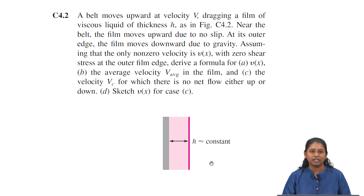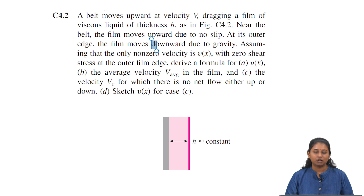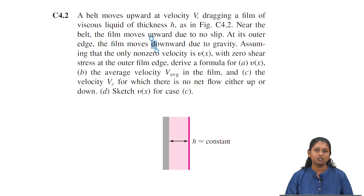This is a tutorial question that we solved in the fluid mechanics course. The question is: a belt moves upwards at velocity v, dragging a film of viscous liquid of thickness h as shown in the figure. Near the belt, the film moves upwards due to no-slip, and at its outer edge the film moves downwards due to gravity. Assuming the only non-zero velocity is v(x) with zero shear stress at the outer film edge, we have to derive a formula for v(x), then find the average velocity in the film, and the velocity vc for which there will be no net flow up or down. Then we have to sketch the velocity profile.